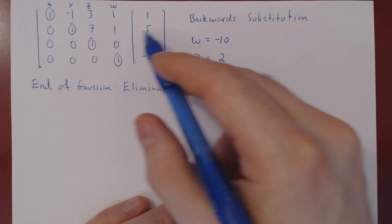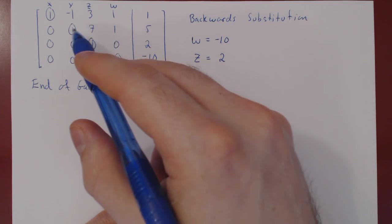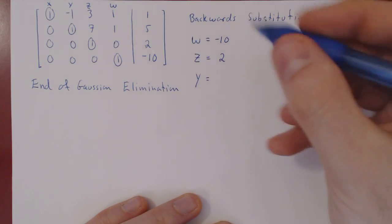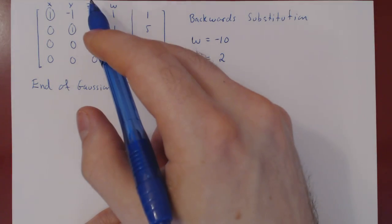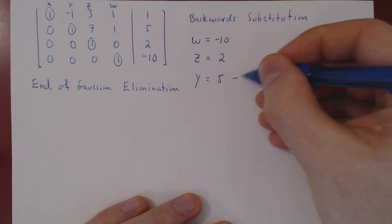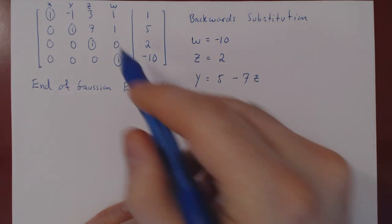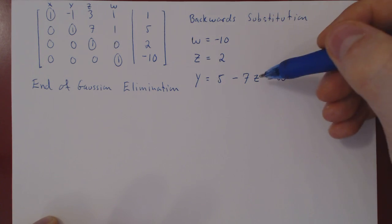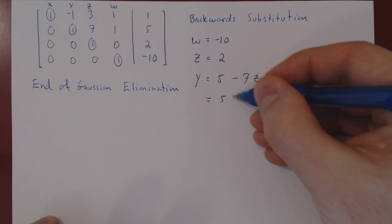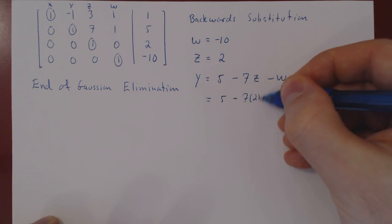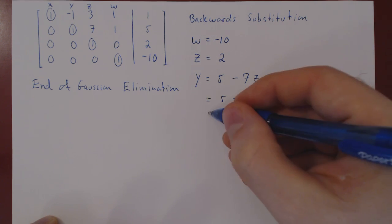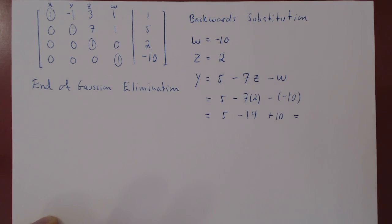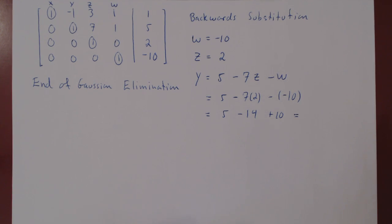Moving up one more row, both coefficients are non-zero. We solve for y: looking at the equals sign first, equals 5. There is a positive 7z on the left which becomes -7z on the right, and a positive w which becomes -w on the right. Substituting known values: y = 5 - 7×2 - (-(-10)) = 5 - 14 + 10.